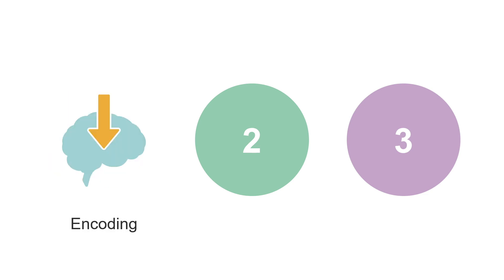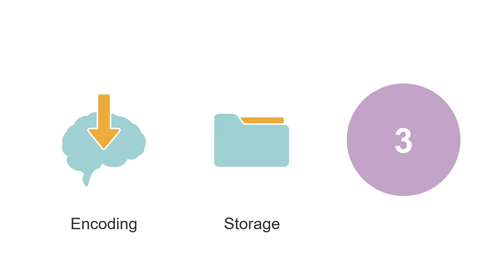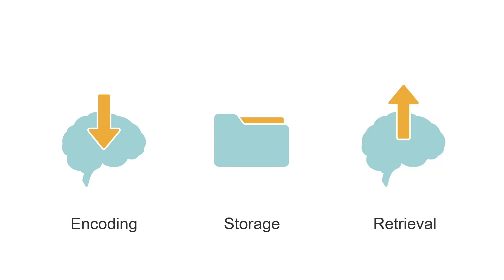That's because there are actually three stages of learning. The first stage, encoding, occurs when you initially learn the information — it's like uploading the information to your brain. The second stage, storage, is the process of maintaining the information over time, like saving a file on your computer. The third and final stage, retrieval, is the process of extracting or accessing the information when you need it. Think of this like downloading the information from your brain in order to use it.